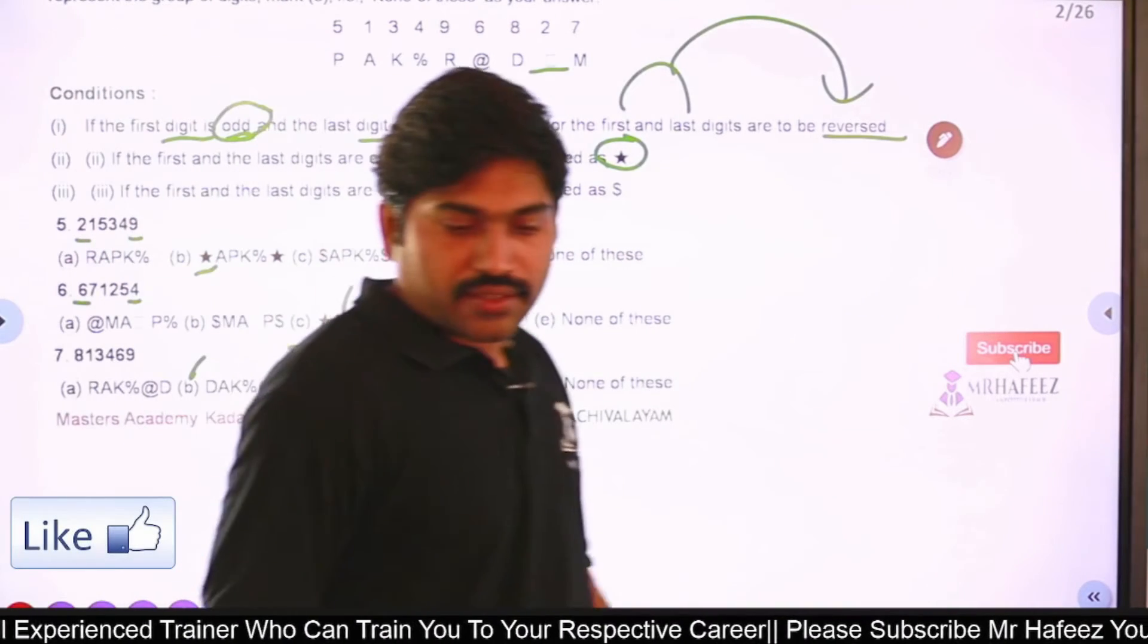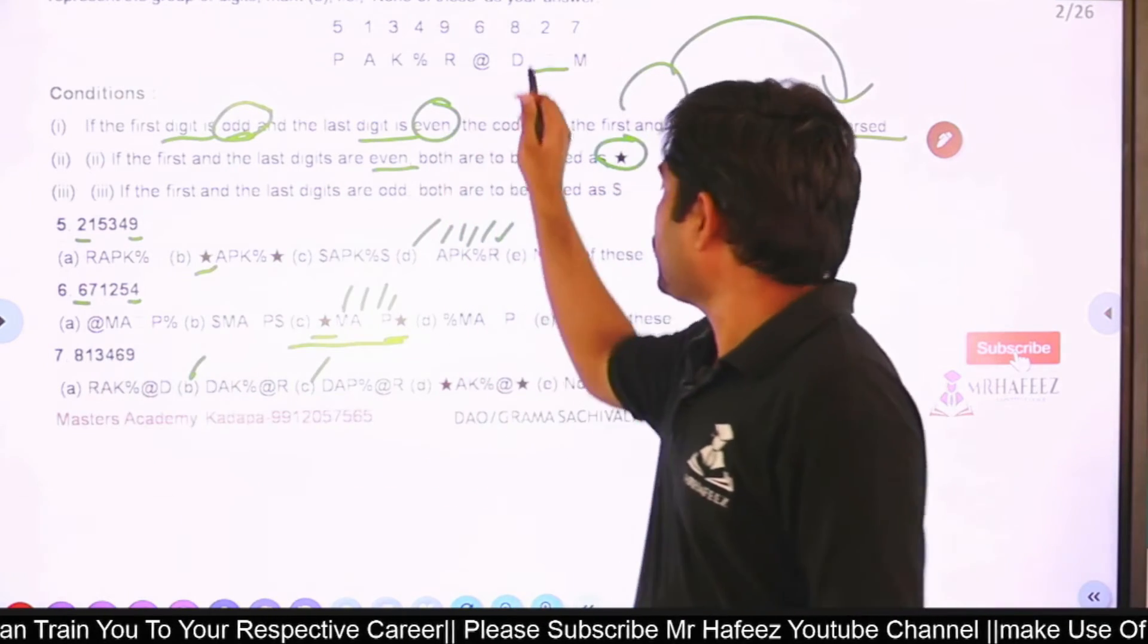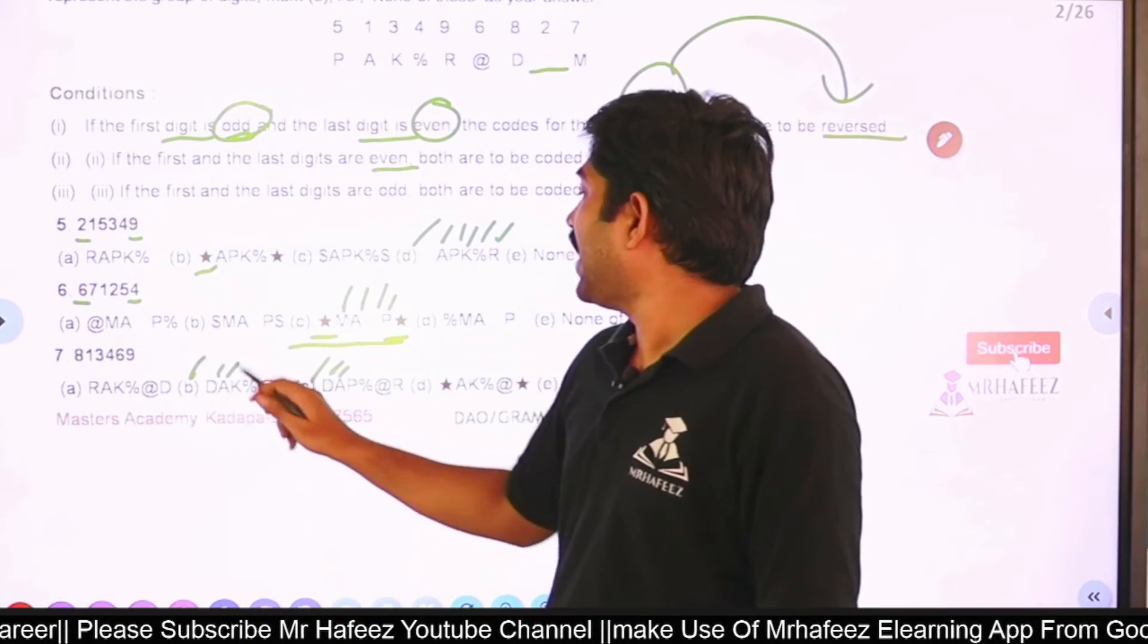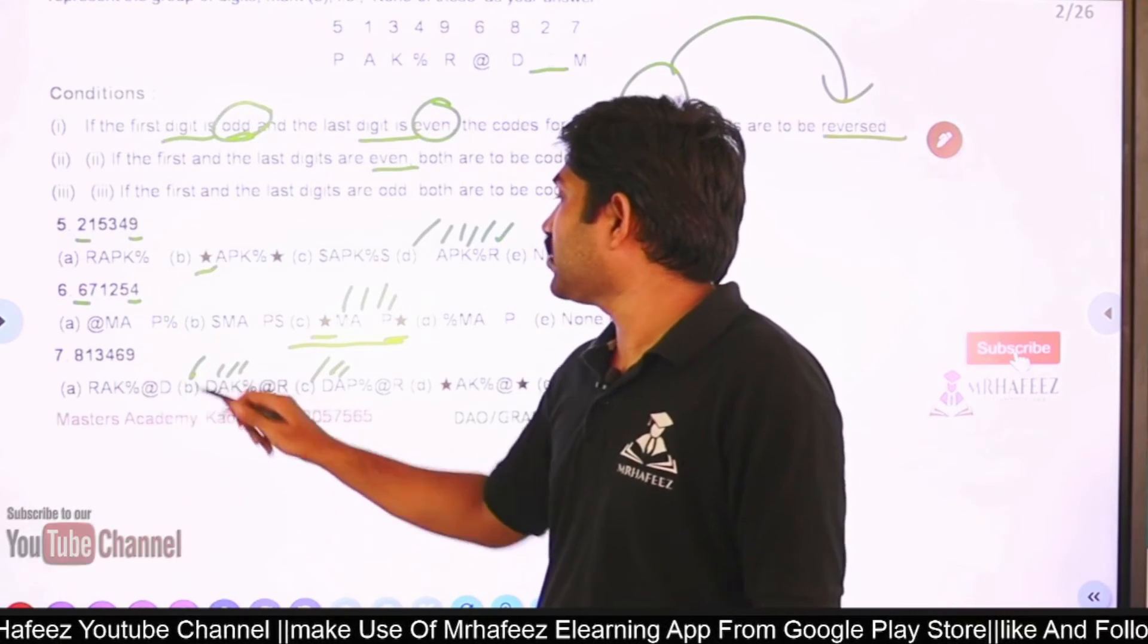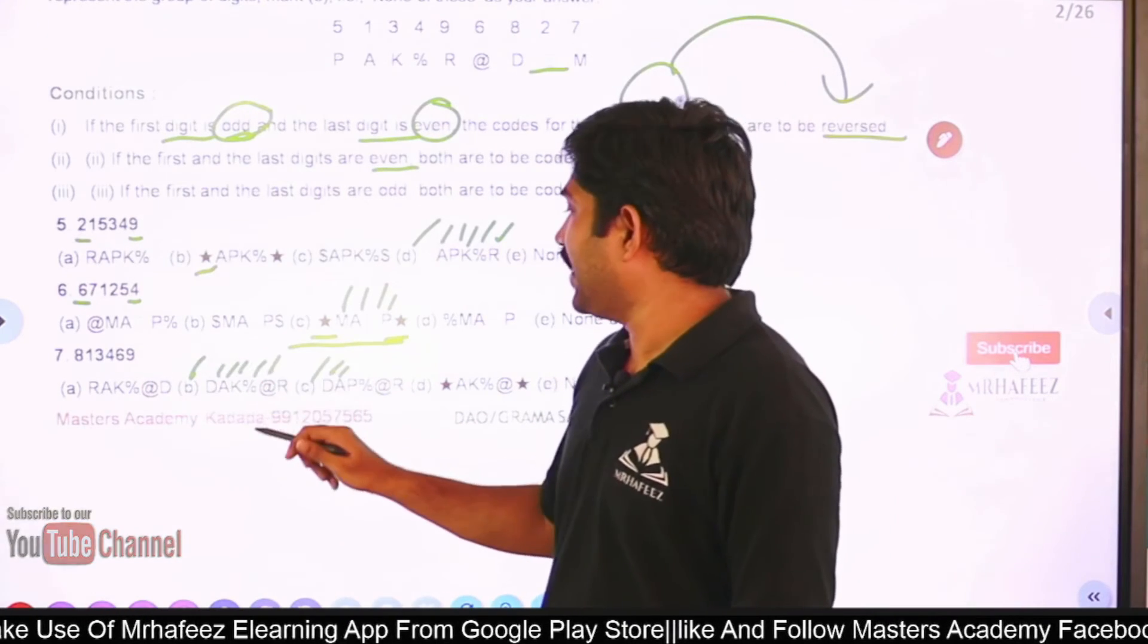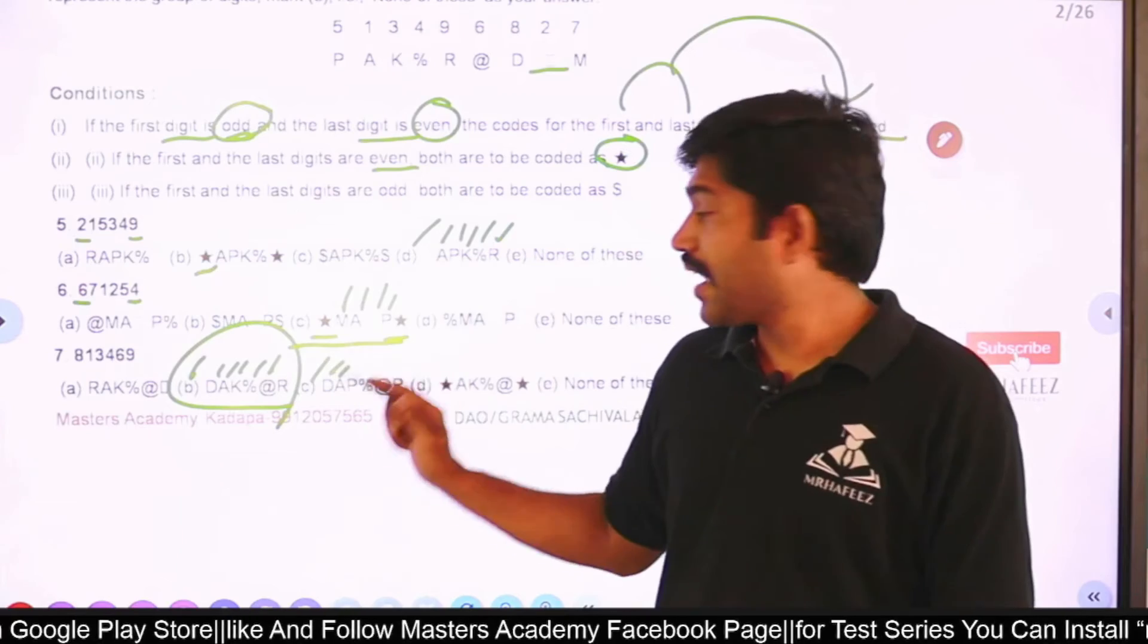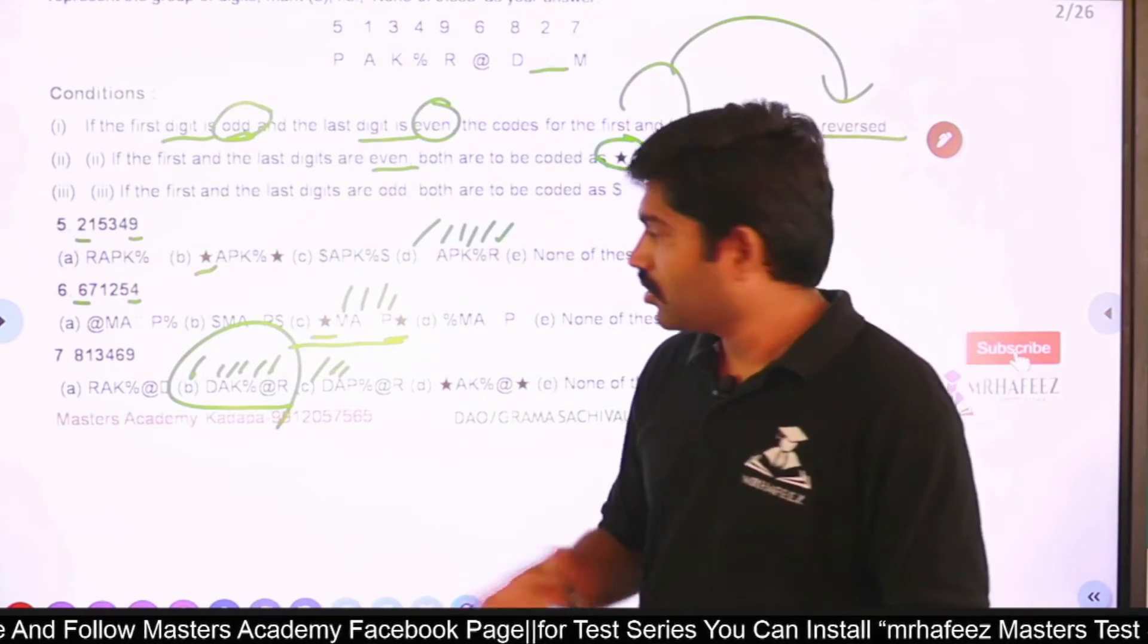Let me check. 8 means D, 1 means A - yes, D A. And 3 means K - right. 4 means percentage. 6 at the rate. So this can be my answer. That's it. That is my answer. It's D, A, K, percentage, at the rate, R. Very good. Moving to the next.